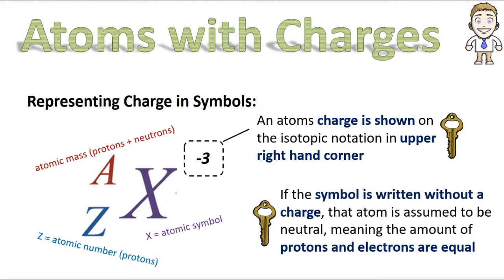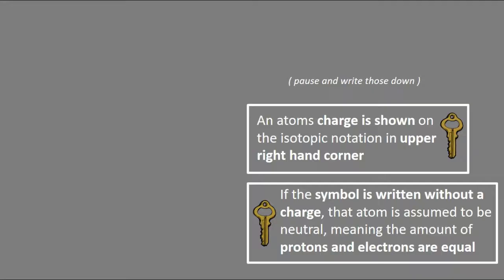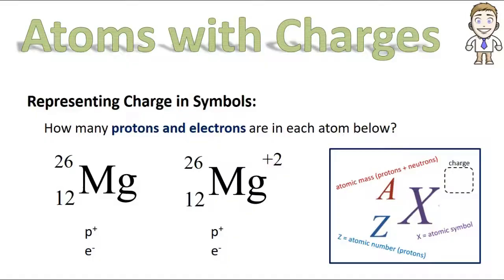We should also point out that if this symbol is written without a charge, which is most of our, all the symbols we've done up to this point have been this way, then we actually assume that the atom is neutral. And if it's neutral, that means it has no charge. That's why you didn't put one, which means the protons and electrons are equal.